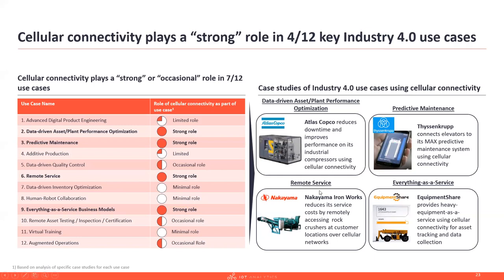On the right side of the screen we highlight four specific case studies implementing cellular connectivity to achieve Industry 4.0 use cases. Atlas Copco reduces downtime and improves performance of its industrial compressors using cellular connectivity. Thyssenkrupp uses cellular connectivity for connecting their elevators to their predictive maintenance system, reducing costs and improving customer experience. Nakayama Ironworks uses industrial cellular connectivity to reduce service costs by remotely accessing their rock crushers at customer locations. Equipment Share uses cellular connectivity to offer heavy equipment as a service and track rented assets.